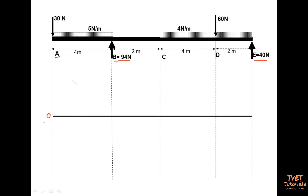We start at point A. The question we ask is: what is at point A? The answer is there is a point load. A point load causes a negative shear force, so we go down using a vertical line. The magnitude of the point load is 30 newtons, so we go down by 30 units, drawing a vertical line from zero going down, and we label that corner negative 30 newtons.